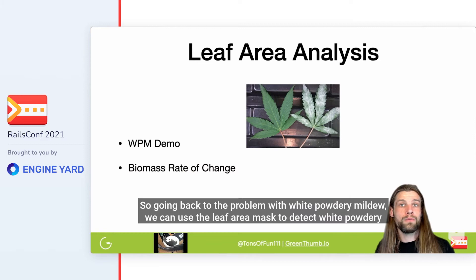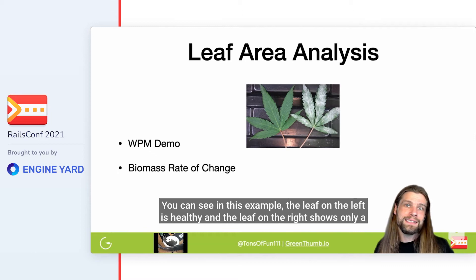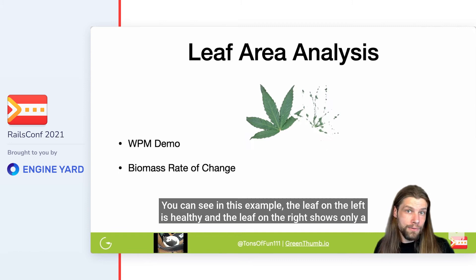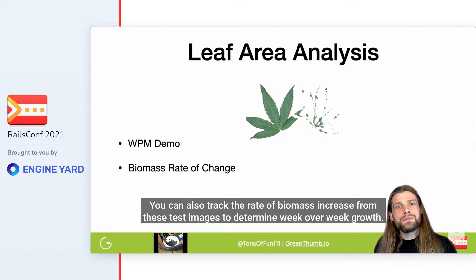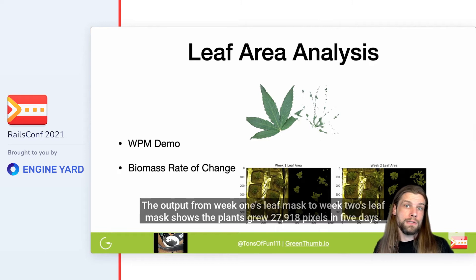Going back to the problem with white powdery mildew, we can use the leaf area mask to detect it by tracking the decay in healthy leaf area pixels. You can see in this example the leaf on the left is healthy and the leaf on the right shows only a small percentage of its area's healthy leaf pixels. You can also track the rate of biomass increase from these test images to determine week-over-week growth. The output from week one's leaf mask to week two's leaf mask shows the plants grew 27,918 pixels in five days.